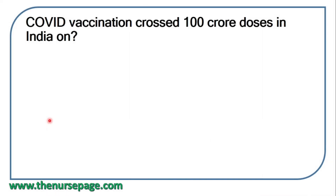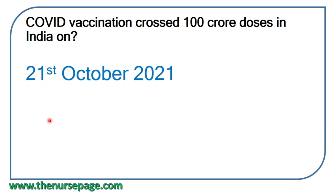Next question: COVID vaccination crossed 100 crore doses in India on 21st October 2021.